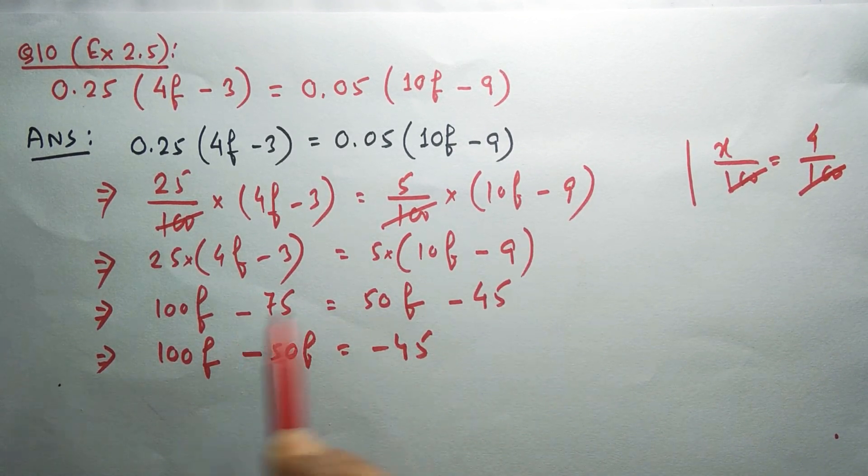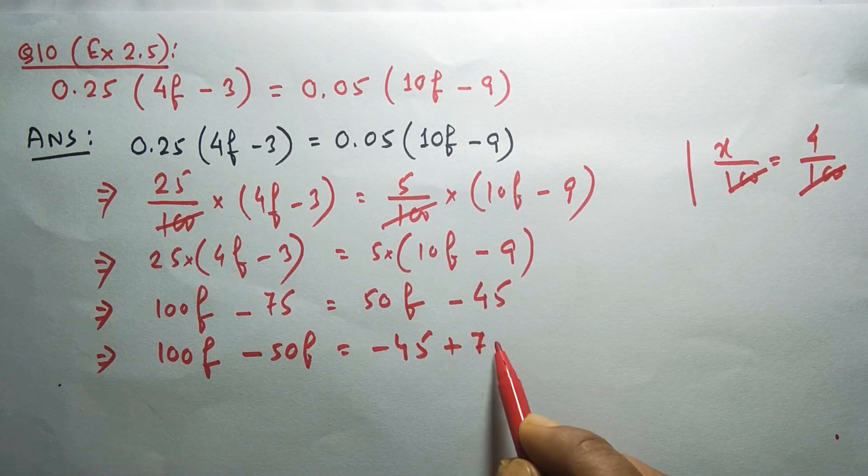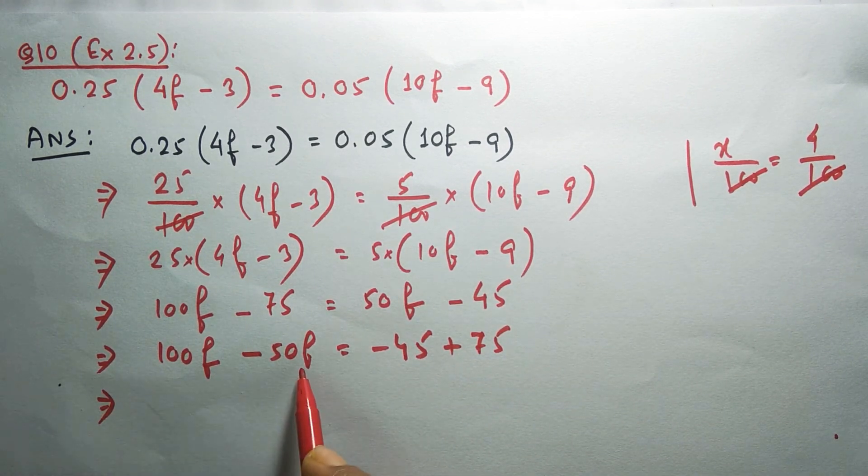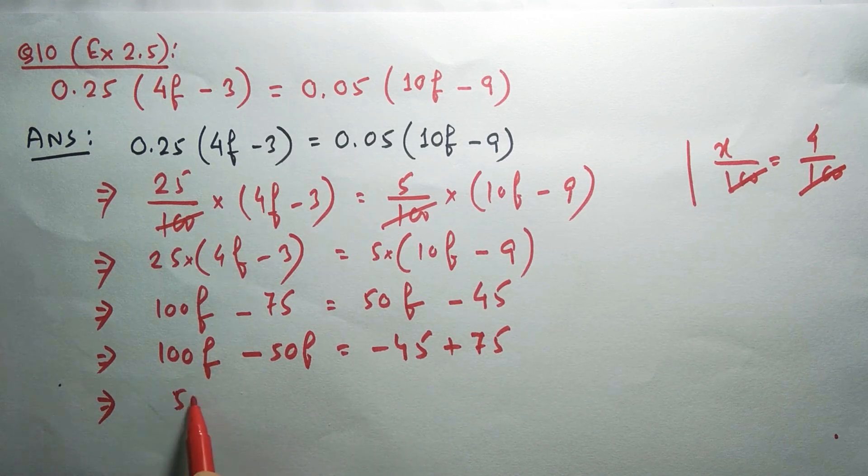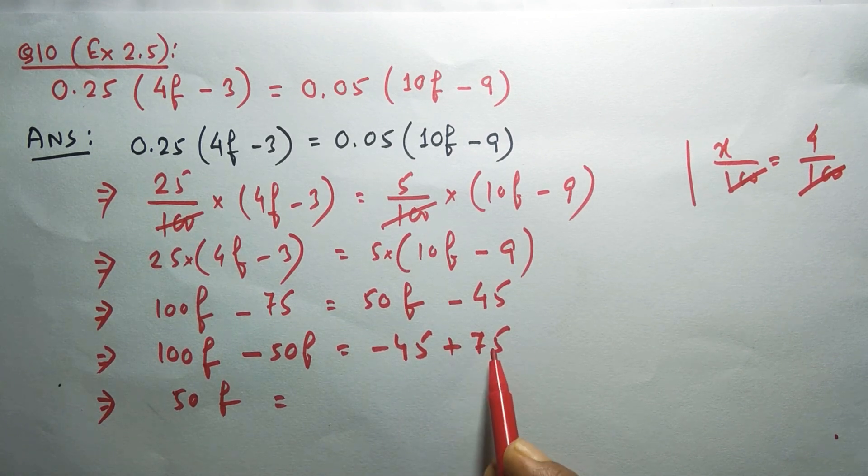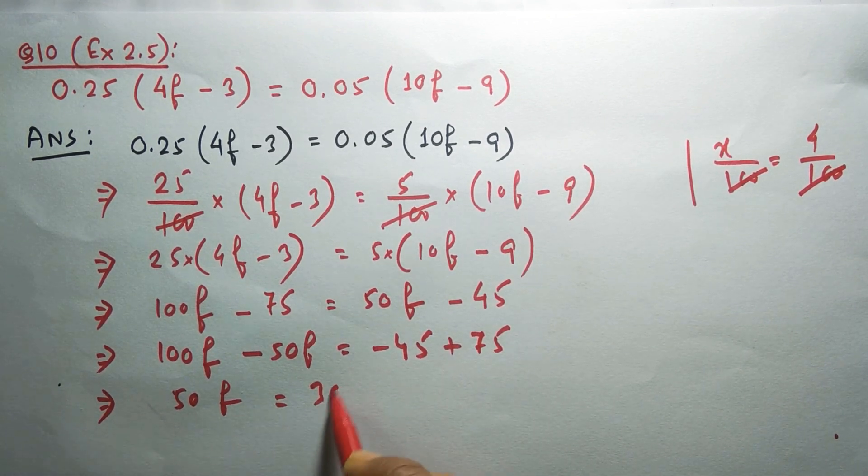This implies 100f minus 50f, you know 100 minus 50 will be 50f. 50f equals minus plus minus, so 75 minus 45 will be 30.